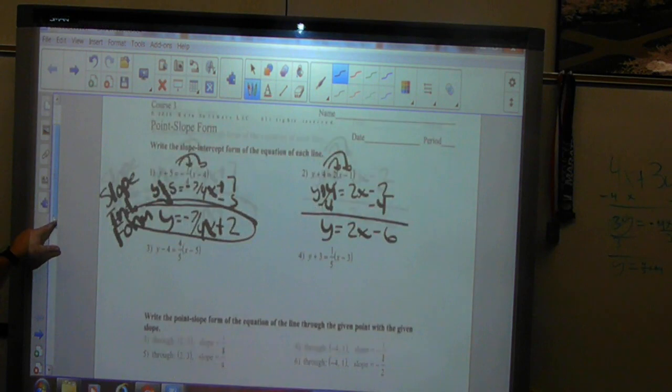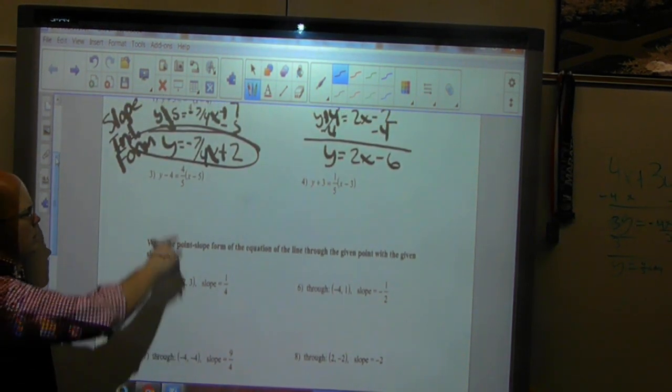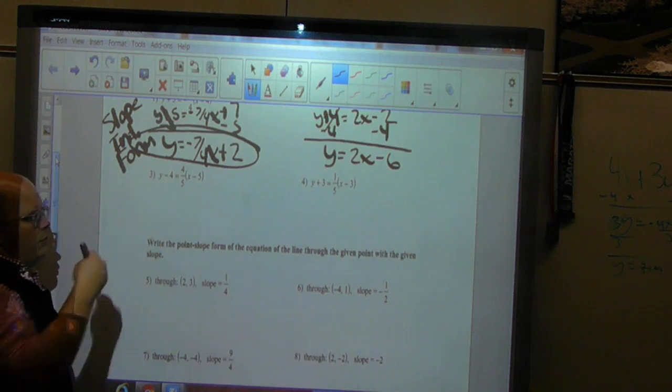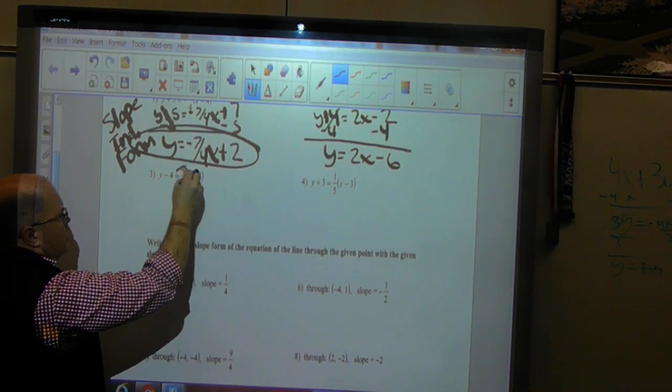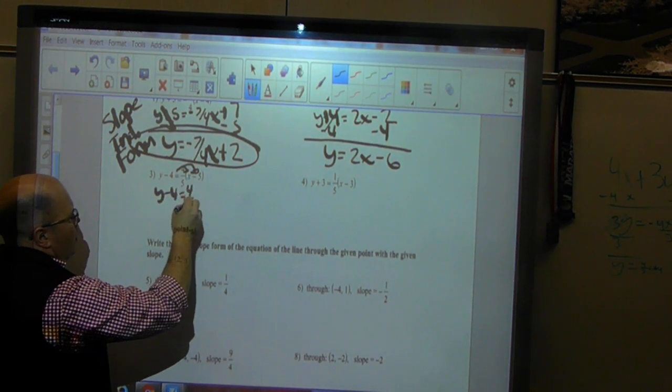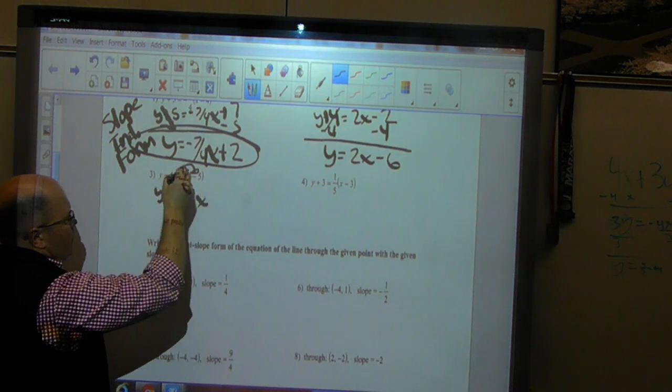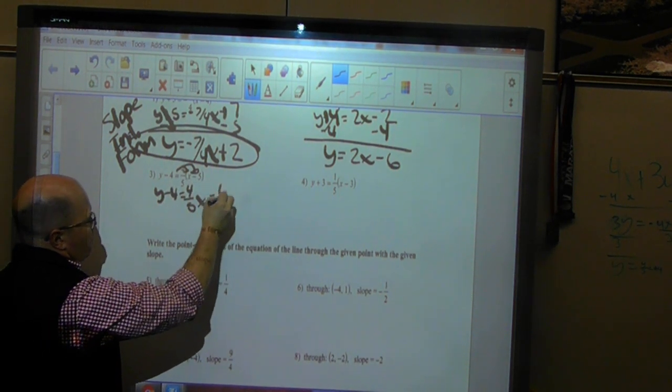Okay, we'll do one more example before I get too crazy. There we go. We'll use this one here, where y minus 4 equals 4 fifths x minus 5. So again, we're going to distribute. And you get y minus 4 is equal to 4 over 5x. And then 4 fifths times negative 5 is a negative 4.